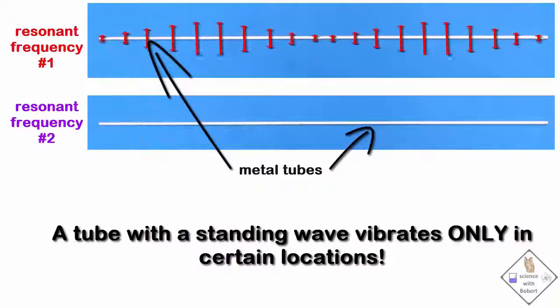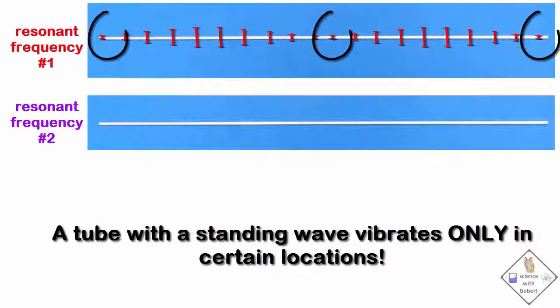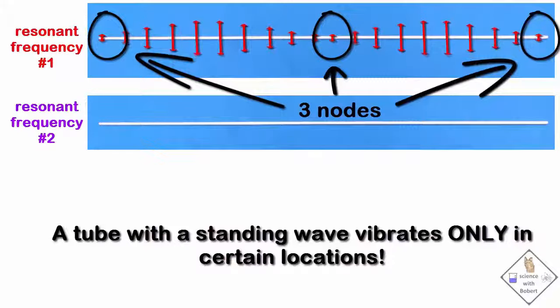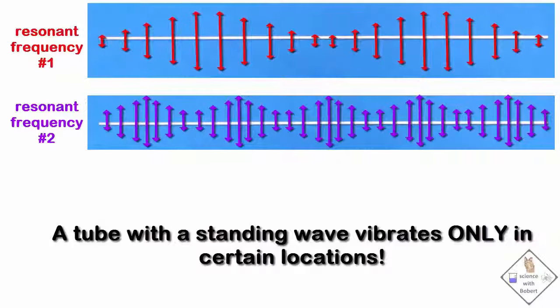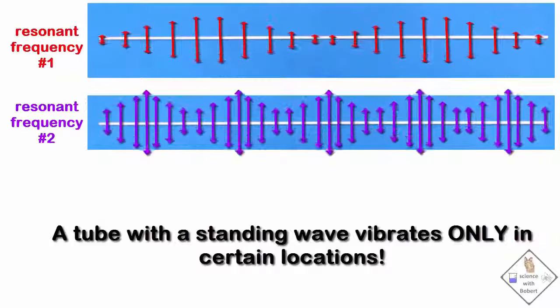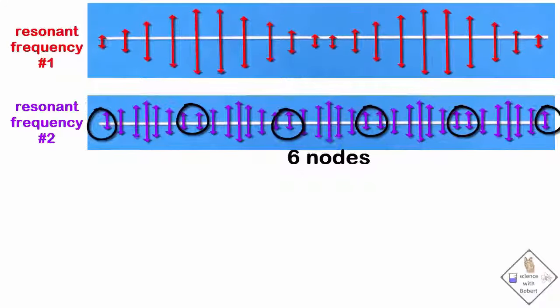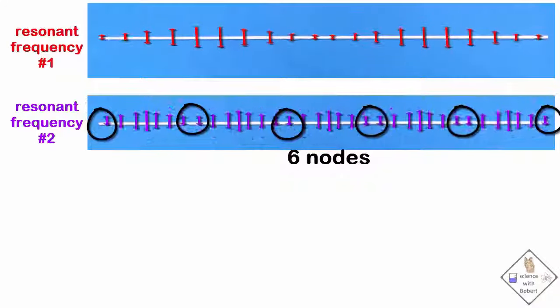The locations on the tube that are not vibrating are called nodes. For example, resonant frequency number one has a total of three nodes. Resonant frequency number two has a total of six nodes. Remember, objects can only have certain resonant frequencies.